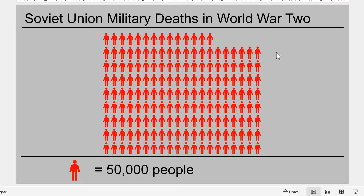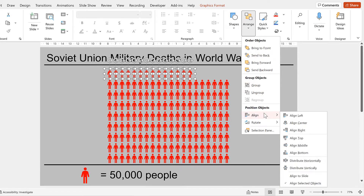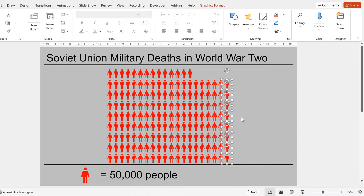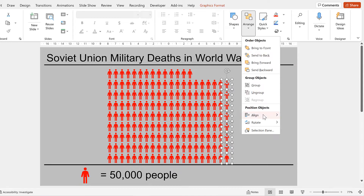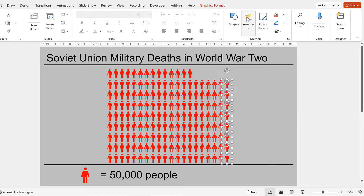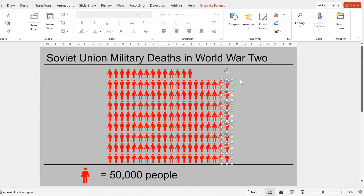If you're not sure whether your icons are lined up correctly or not, you can click and drag to select a whole row and then go to Arrange and Align and select Align Middle, and if they aren't lined up correctly that will fix it. You can do the same thing to a column — go to Arrange and Align, select Align Center, and you can also go to Align and Distribute Vertically to make sure all of the icons are evenly spaced out.